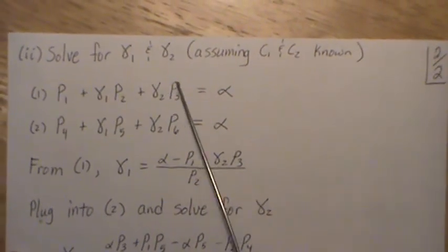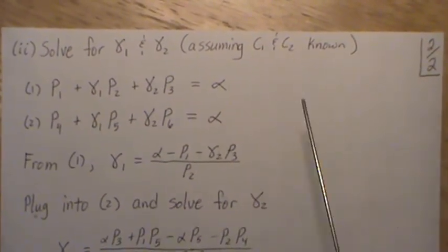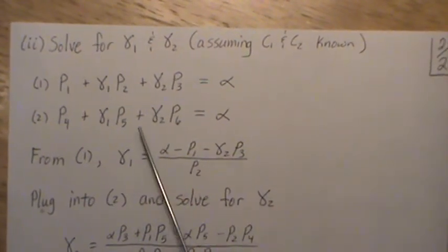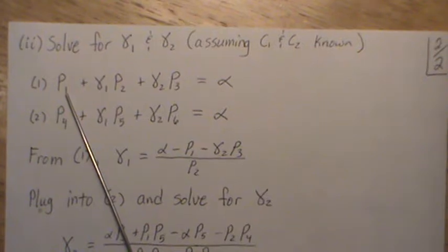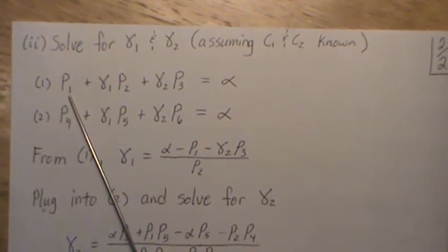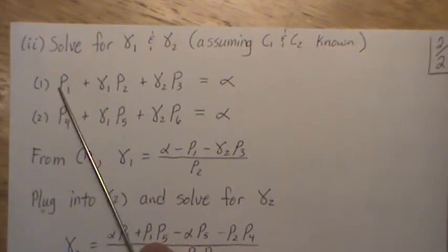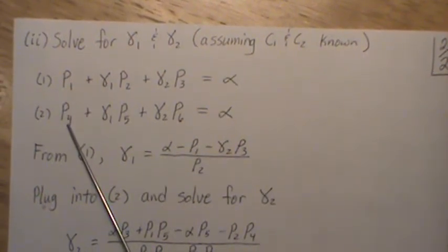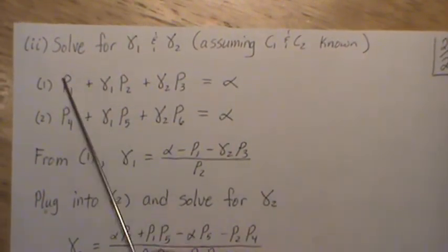So when we solve for gamma 1 and gamma 2, we're assuming that the C1 and C2s are known. Then those two side conditions become this. This is the probability of being between C1 and C2, given that lambda 1 is a true value. And this is the same, but assuming lambda 2 is a true value.